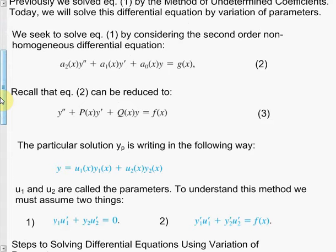The particular solution for variation of parameters — and also for Green's function, which appears in mechanical engineering, industrial engineering, and electrical engineering — is set up so that y_p equals some parameter u₁ times y₁ plus some parameter u₂ times y₂. For a third-order equation you'd add u₃·y₃, but here we restrict to second order, so we only have two terms.